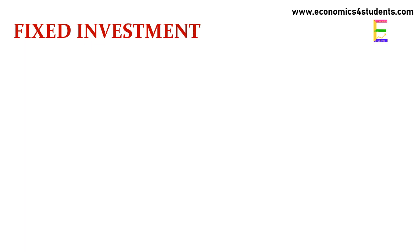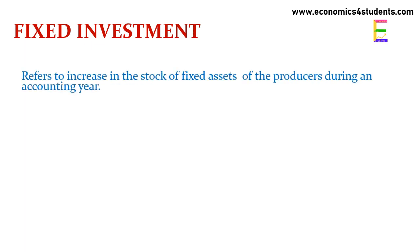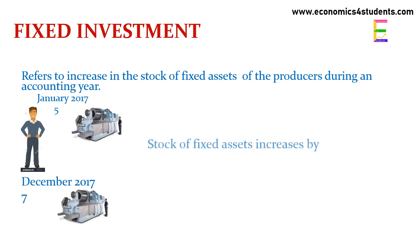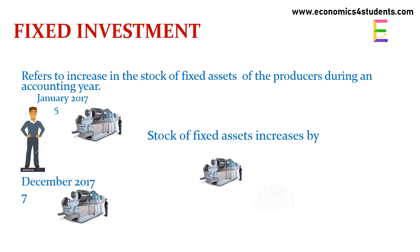Investment has two components: fixed investment and inventory investment. Fixed investment refers to increase in the stock of fixed assets of the producer during an accounting year. Suppose a producer in January 2017 has a stock of five machines, and in December 2017 he has seven machines. Then stock of his fixed assets increases by two machines during the year 2017, so his fixed investment is two machines.